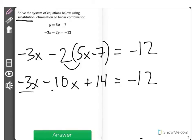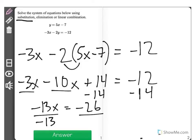Now I'm going to group like terms here. Get negative 13x. I'll subtract 14 from both sides, which will give me negative 26. And then I could divide both sides by negative 13. This will leave me with x all alone. x is equal to negative 26 divided by negative 13, which is equal to positive 2.